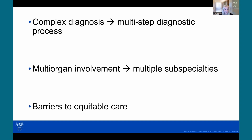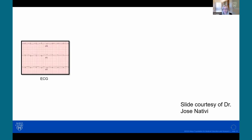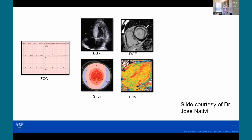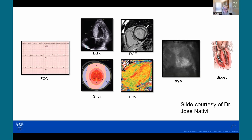Complex diagnosis: we have lots of tools to diagnose amyloid — the EKG, echo, cardiac MRI, nuclear scintigraphy, and biopsy. But this can sometimes make the diagnostic process even more difficult. What tool to choose first? This makes the process a little more convoluted and also daunting.